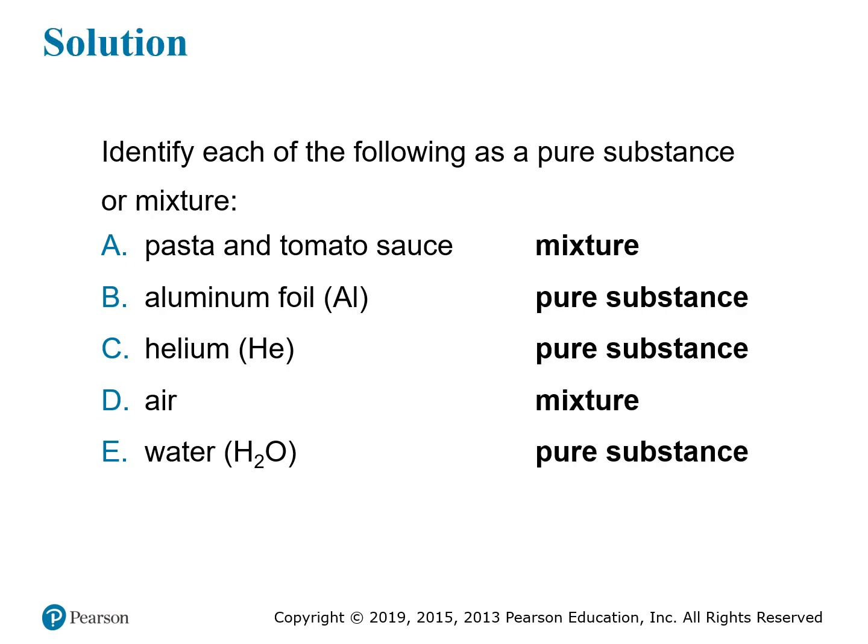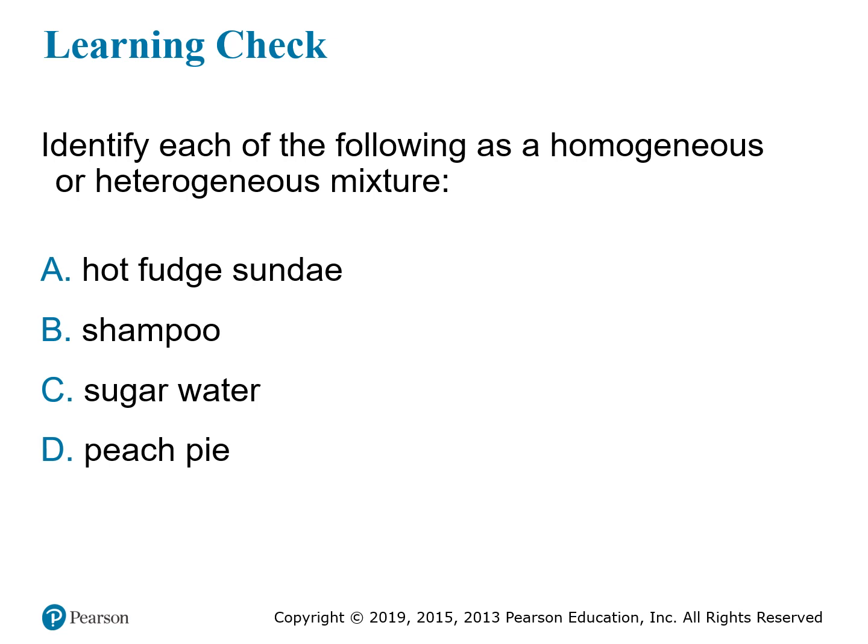Here are the answers. This next slide presents a bunch of mixtures and asks whether they're homogeneous or heterogeneous. A hot fudge sundae is clearly heterogeneous — you can see the difference between the ice cream, the fudge, and the cherry on top, even with the naked eye. Shampoo would be a homogeneous mixture — if you pour some into your hand, most shampoos are rather uniform and you can't see different parts. Sugar water is also a homogeneous mixture — if you dissolve sugar in water, you won't be able to see particles of sugar floating around as long as it's dissolved; it'll be uniform. Peach pie, of course, would be a heterogeneous mixture — you can tell the difference between the crust and the filling, and even within the filling you can tell the difference between pieces of fruit and the syrup around them.